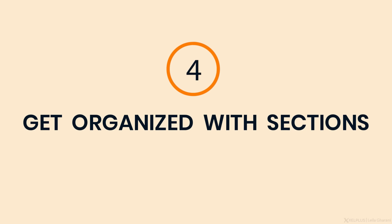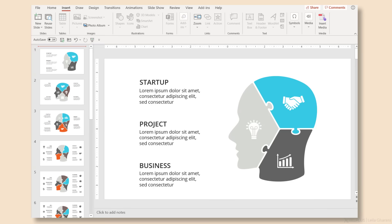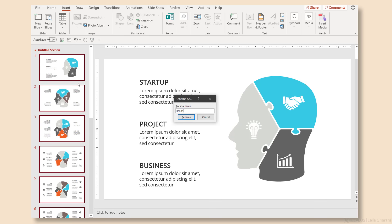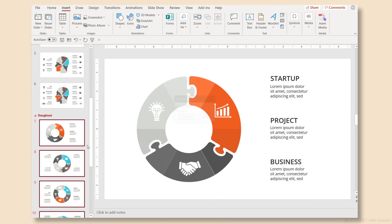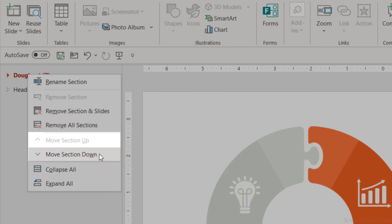Number four: get organized with sections. Sometimes you have to deal with presentations that have a lot of slides. To stay organized, you can split your slides into meaningful groups or sections. They're super simple to create — just right-click between slides and select Add Section, then put the section name in the dialog box. Once organized into sections, you can collapse entire sections, making it much easier to focus on a specific part of the presentation. To move a section, just click and drag, or right-click and select Move Section Up or Down.